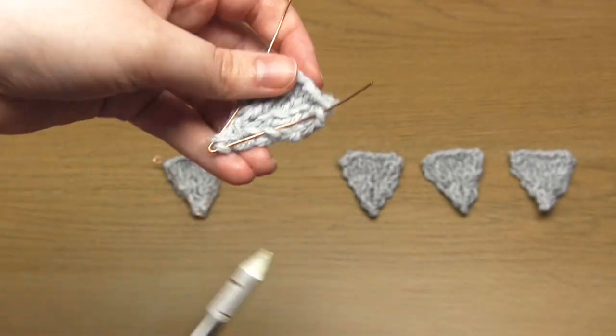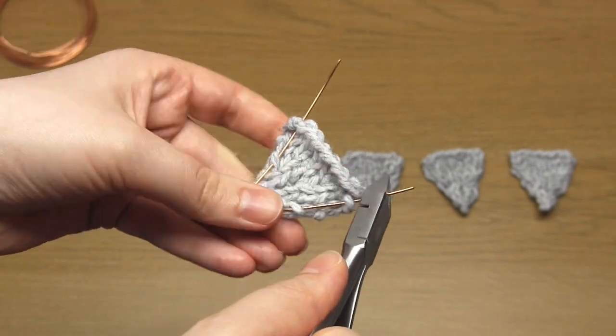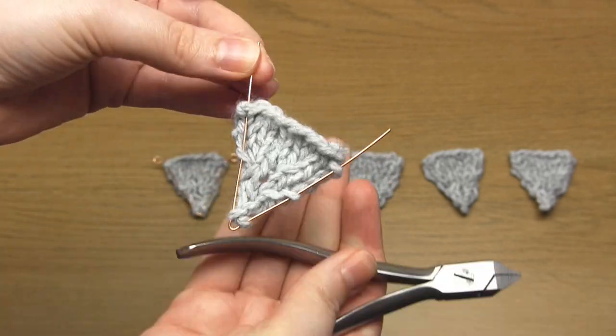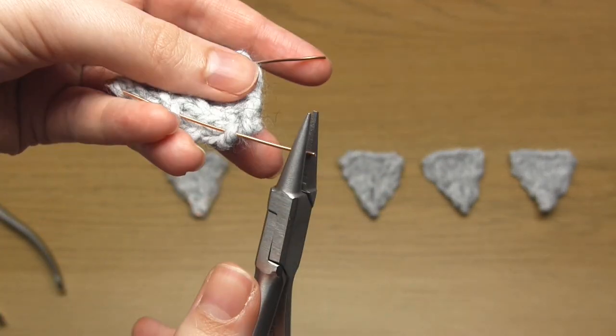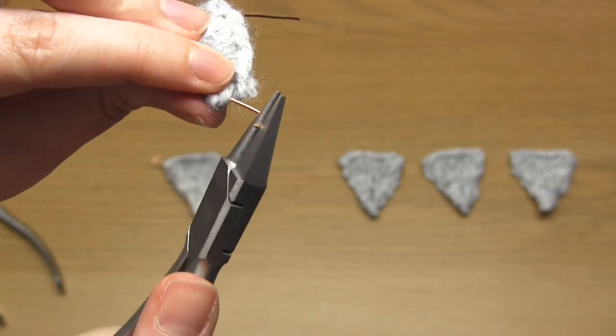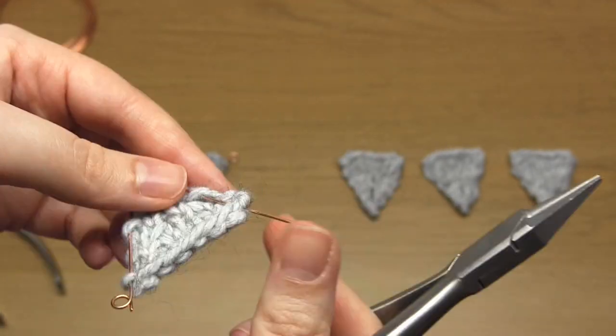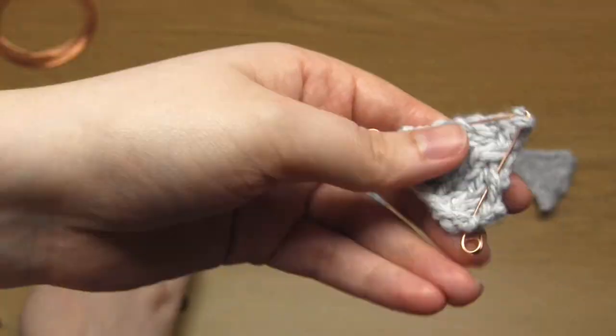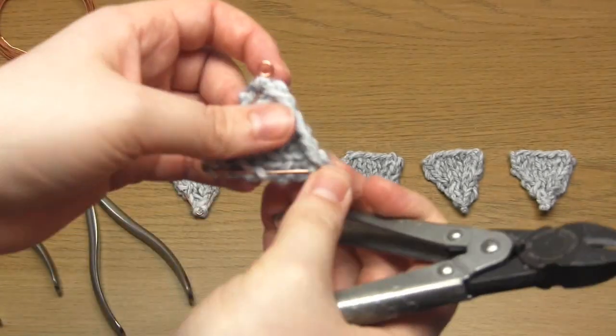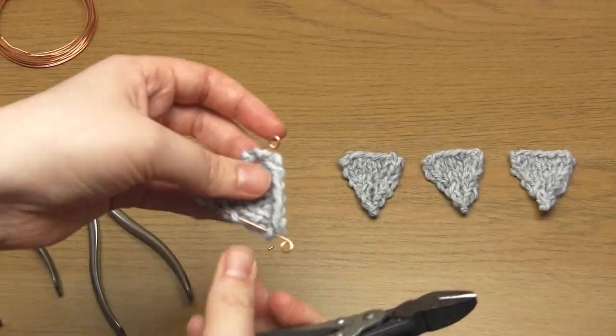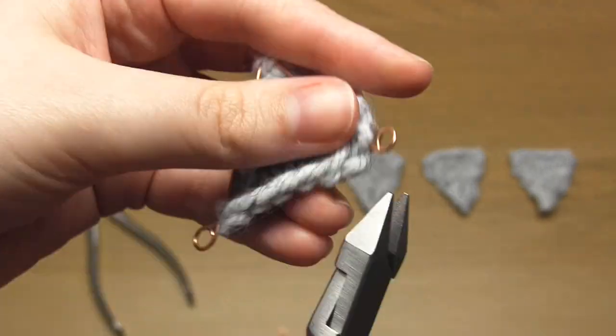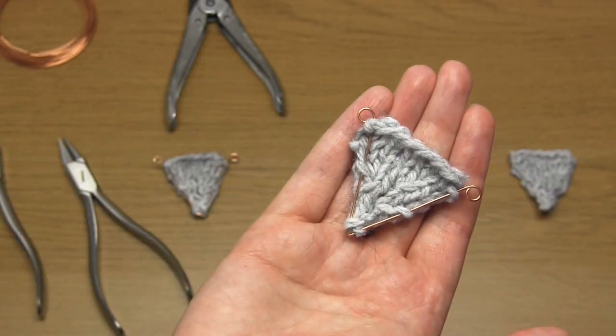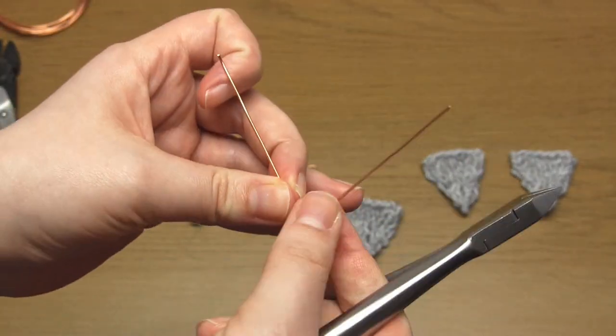Then shape the wire so that the sides are straight and are as far apart as they can go. Then use rounded pliers to create a loop at each end of the wire. Cut off any excess wire using your wire cutters. Then just repeat this step for all of the triangle shapes.